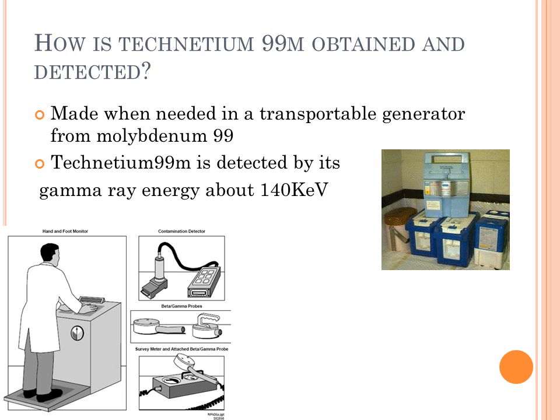How is technetium-99M detected? Technetium-99M can be detected through the use of gamma-ray energy of about 140 keV. Most of the technetium-99M produced in a nuclear reactor originates from the fission of uranium-235.